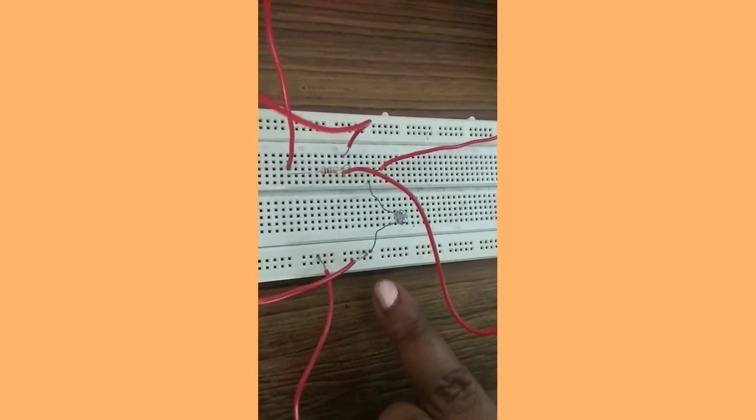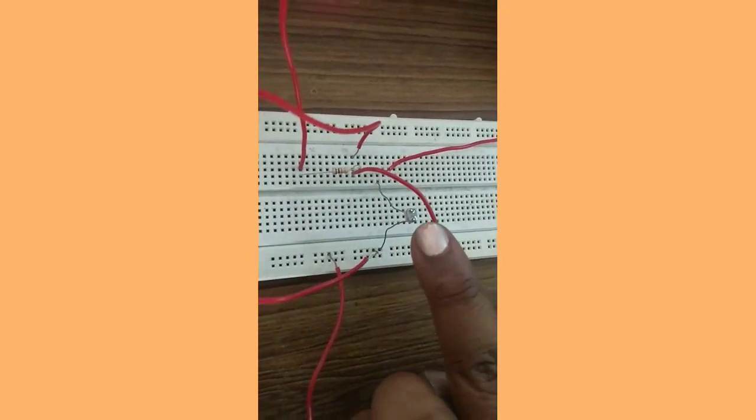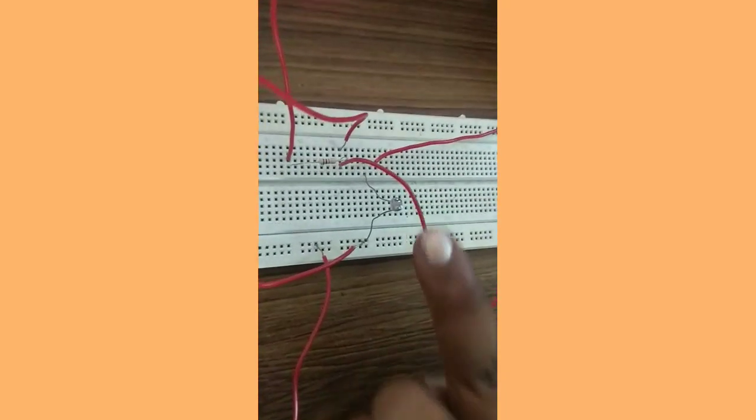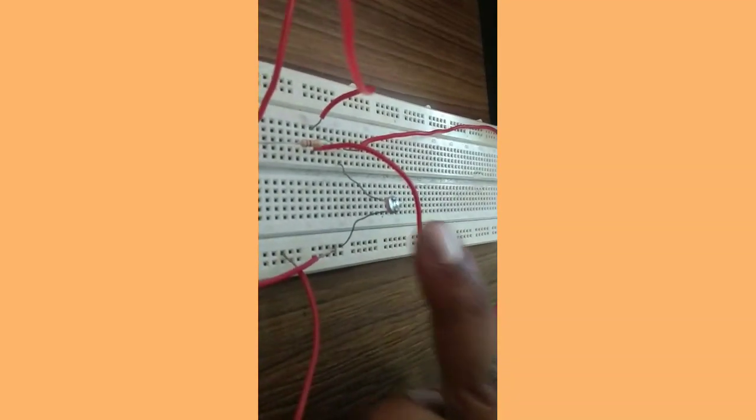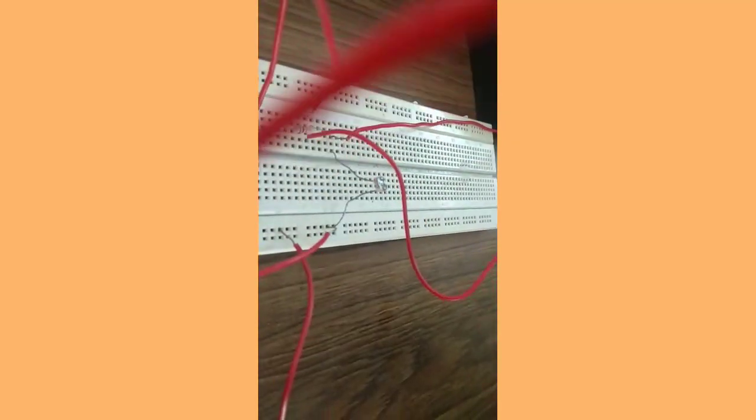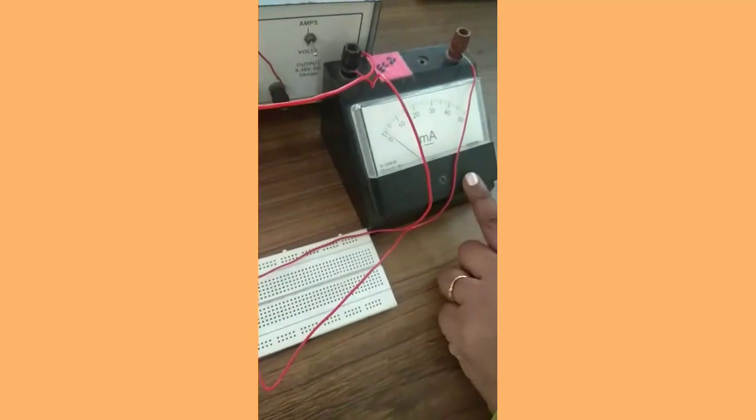You can use a scale to measure the distance. Place your mobile flash or torch at a distance of 1 centimeter above the LDR and measure the voltage and current in the voltmeter and ammeter respectively.